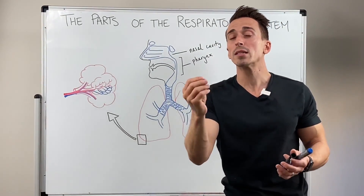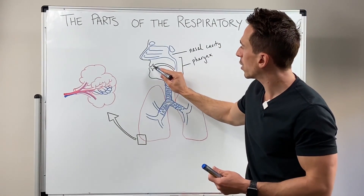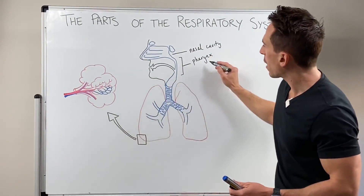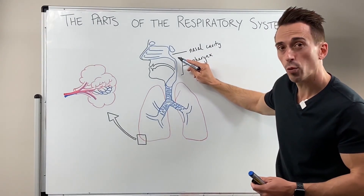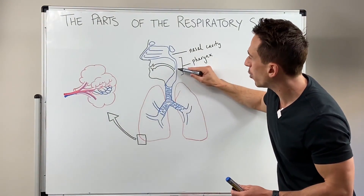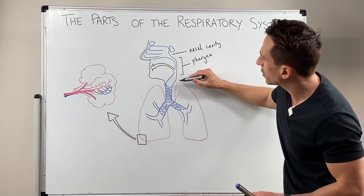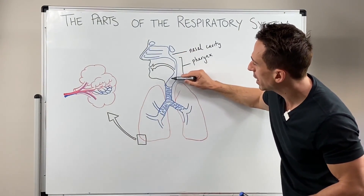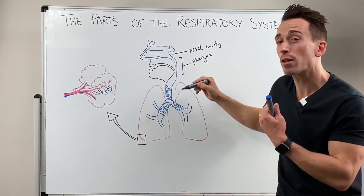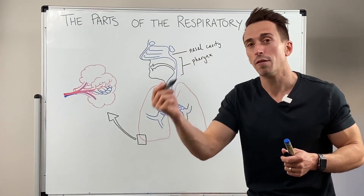Sometimes we can inspire air through the mouth, so obviously that's going to go through the oral cavity. With the pharynx, we've got the nasal portion, which we call the nasopharynx; the oral portion, which we call the oropharynx; and the next portion called the laryngopharynx — just where the larynx is at the back of the throat.